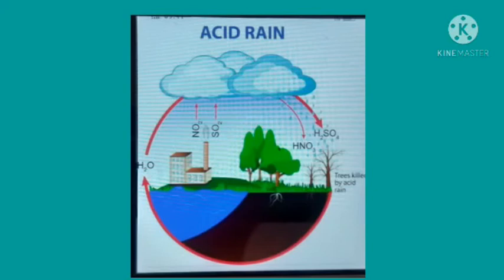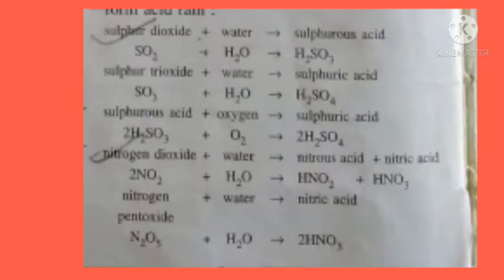The next topic is acid rain. Gases like sulfur dioxide and nitrogen dioxide react with water present in air to form sulfurous acid and sulfuric acid respectively. These acids fall on the Earth with rain, making the rain acidic and becoming part of the water cycle. The chemical reactions are: sulfur dioxide reacts with water to form sulfurous acid; sulfur trioxide reacts with water to form sulfuric acid; and sulfurous acid reacts with oxygen to form sulfuric acid.